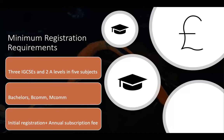You have to have three IGCSEs and two A levels in five subjects. These three IGCSEs need to be in English and math — that is a basic requirement. In addition, if you do not have this and you're coming from the bachelor's BCom or MCom route, you can also enter into this ACCA program.